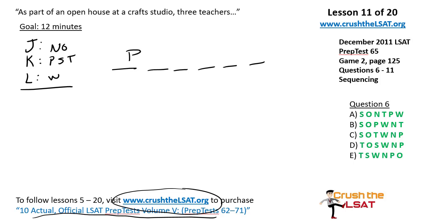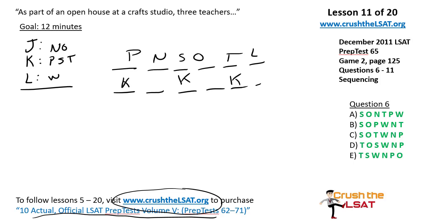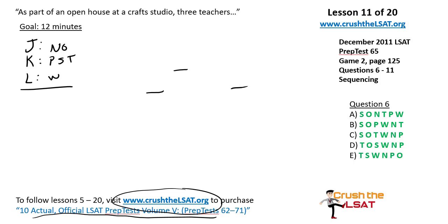What's interesting is that each teacher is associated with specific subjects only. Suppose we had an arrangement like P, N, S, O, T, L — the teachers will always be attached to their particular subject. P is always covered by K, S is always covered by K, T is always covered by K, etc. So the arrangement of subjects always completely determines the arrangement of teachers. What we're really doing is sequencing the six subject items and then attaching the teachers to them.